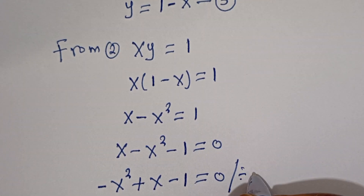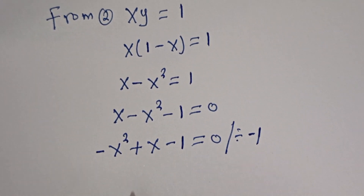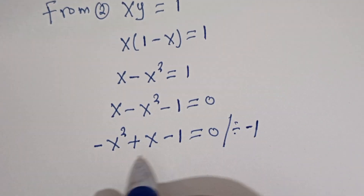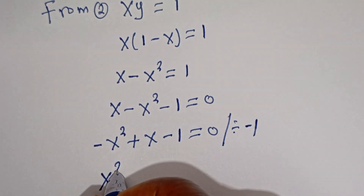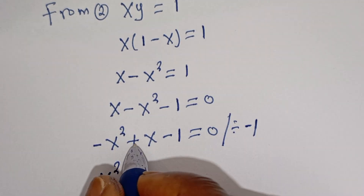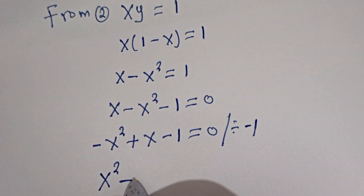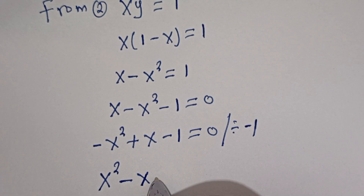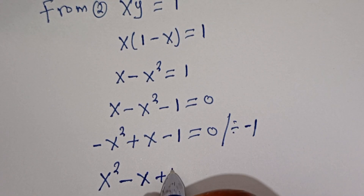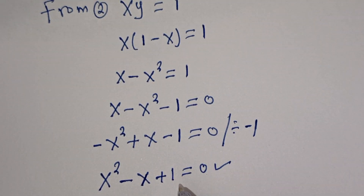Let's divide all through by minus 1. Then dividing minus x squared by minus 1 gives x squared. Dividing plus x by minus 1 gives minus x. Dividing minus 1 by minus 1 gives plus 1, equal to 0. So this is a quadratic equation which can be solved using the quadratic general formula.